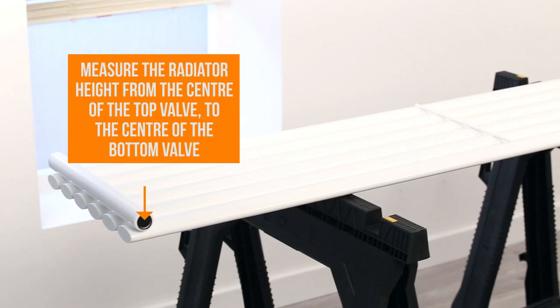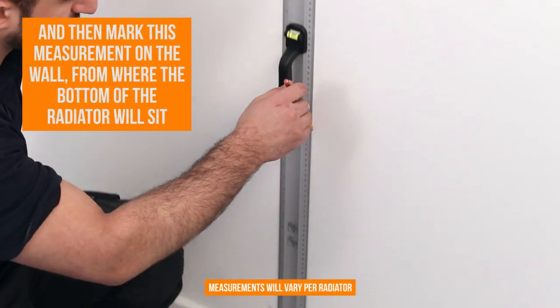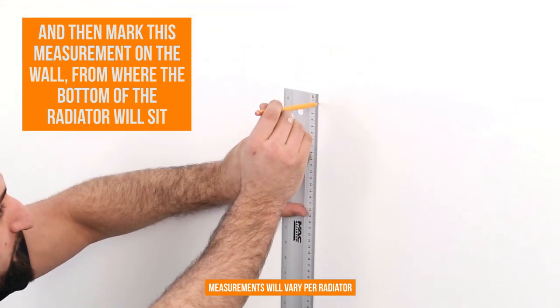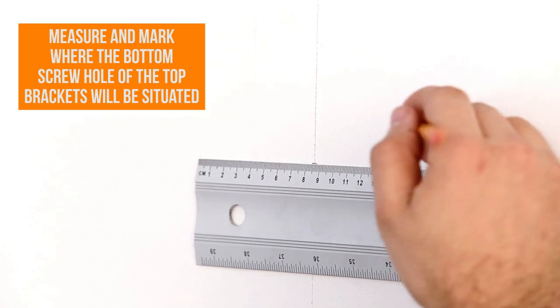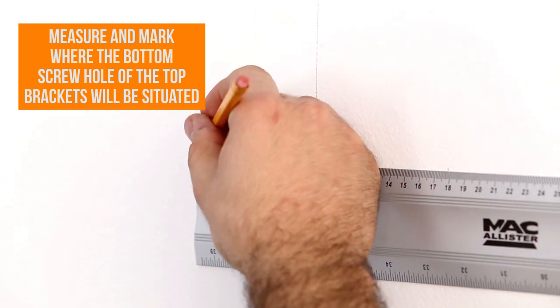On the radiator, measure the height from the centre of the top valve to the centre of the bottom valve and then mark this on the wall from where the bottom centre of the radiator will sit. Measure and mark where the bottom screw hole of the top bracket will be situated, ensuring this is parallel to the bottom brackets.